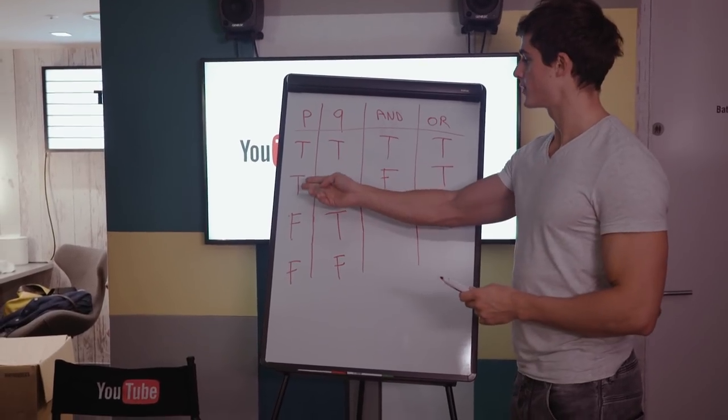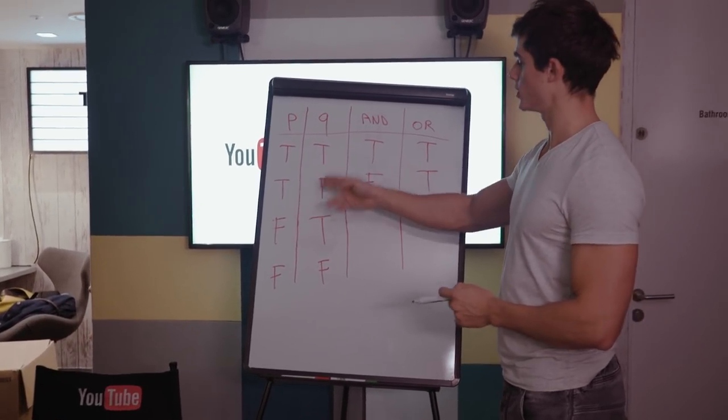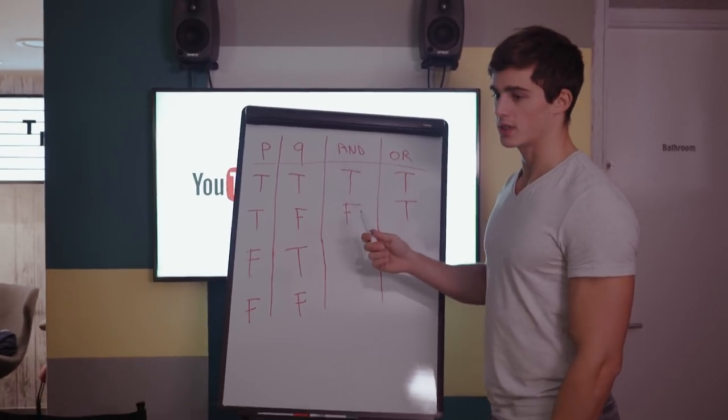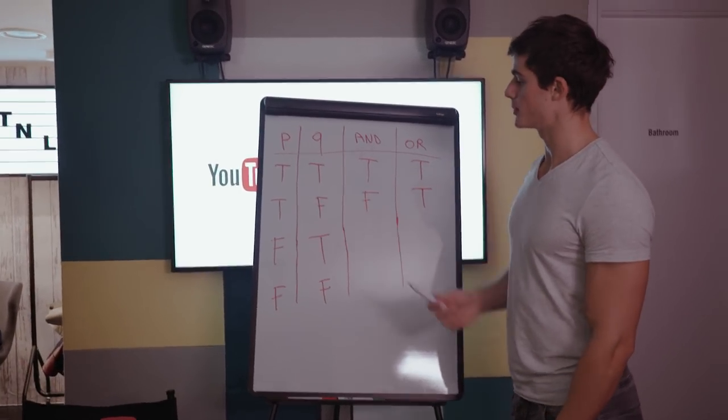However, if we have P true and Q false, then the event P and Q is false, because only one of them is true. So P and Q are not both true.